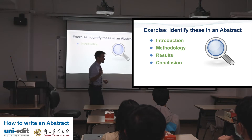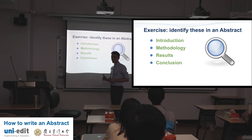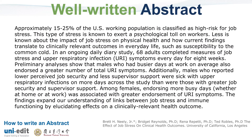Now we've talked about introduction, methodology, results, and conclusion — what do they look like in an abstract? Let's do it. I'll read this and you think about which section goes where. 'Approximately 15 to 25% of the U.S. working population is classified as high risk for job stress. This type of stress is known to exert a psychological toll on workers. Less is known about the impact of job stress on physical health and how current findings translate to clinically relevant outcomes in everyday life, such as susceptibility to the common cold.'